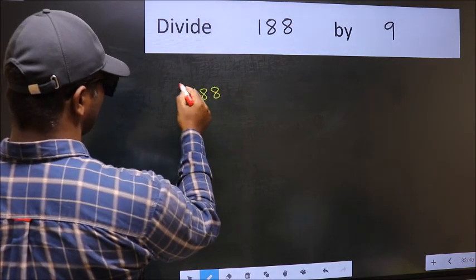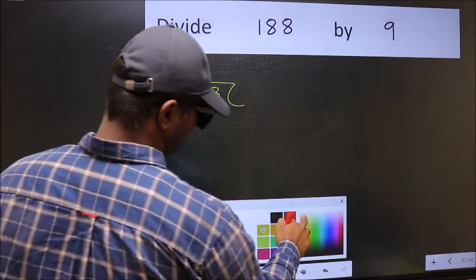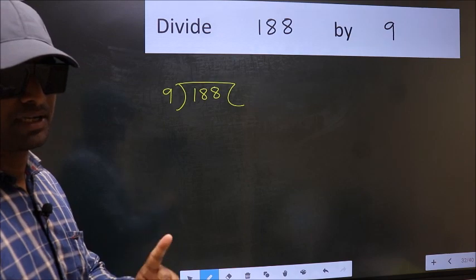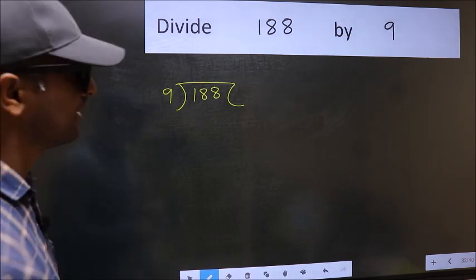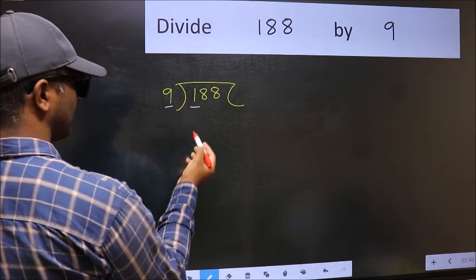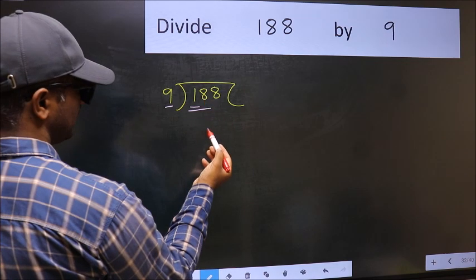188 and 9 here. This is step 1. Next, here we have 1 and here 9. 1 is smaller than 9, so we should take two numbers: 18.